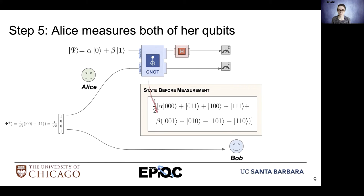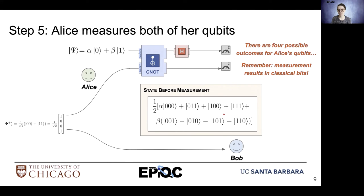When Alice measures, she'll be observing the state of these first two qubits across all these basis states. There are four possible outcomes for Alice's qubits upon measurement. When she measures, that information collapses into a classical bit, so the result is classical.